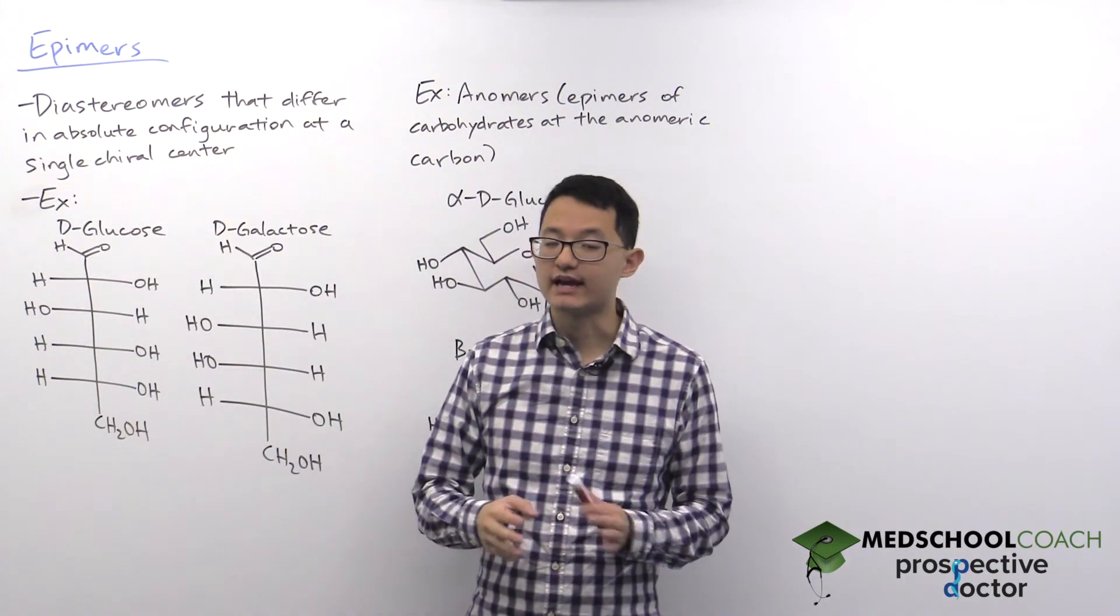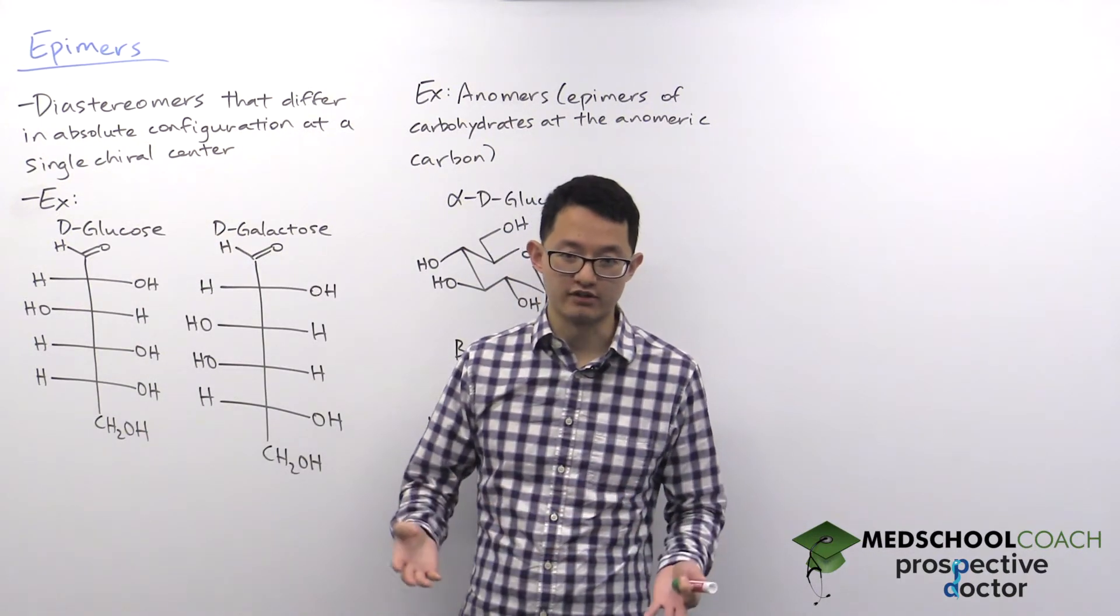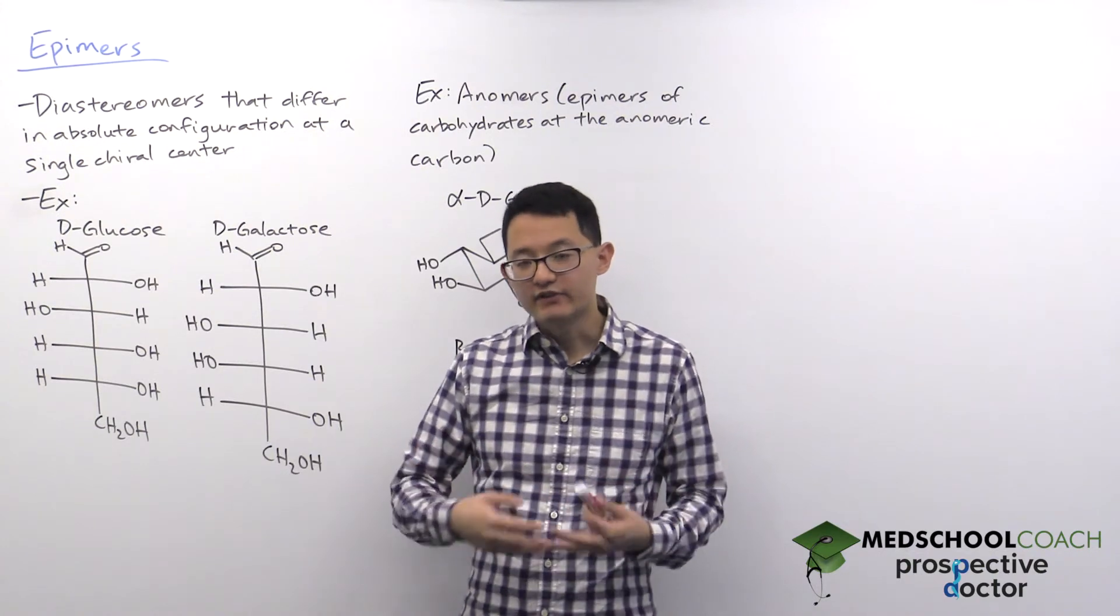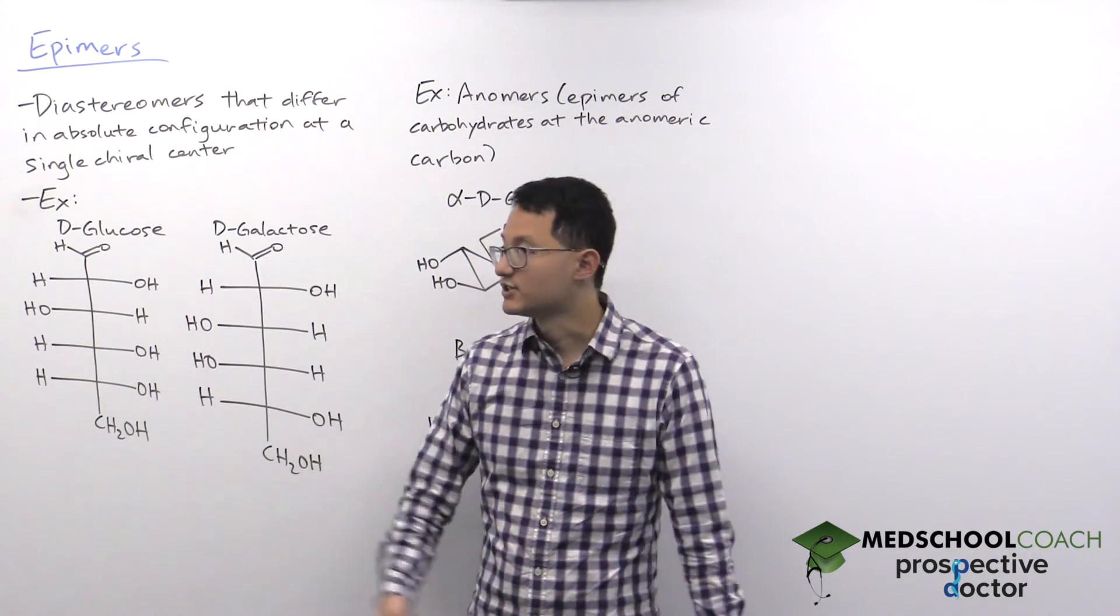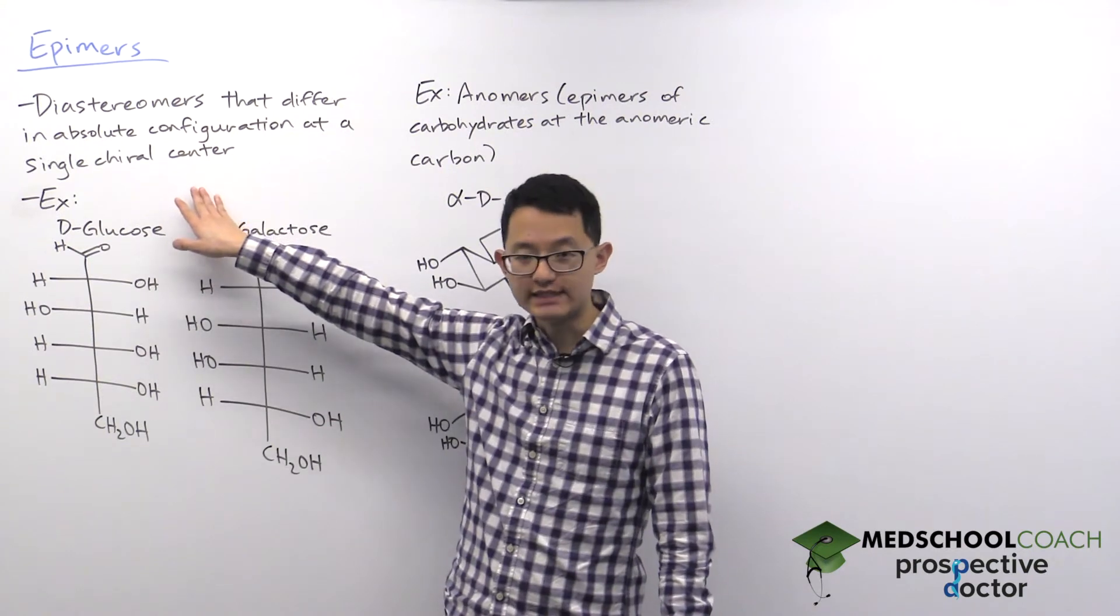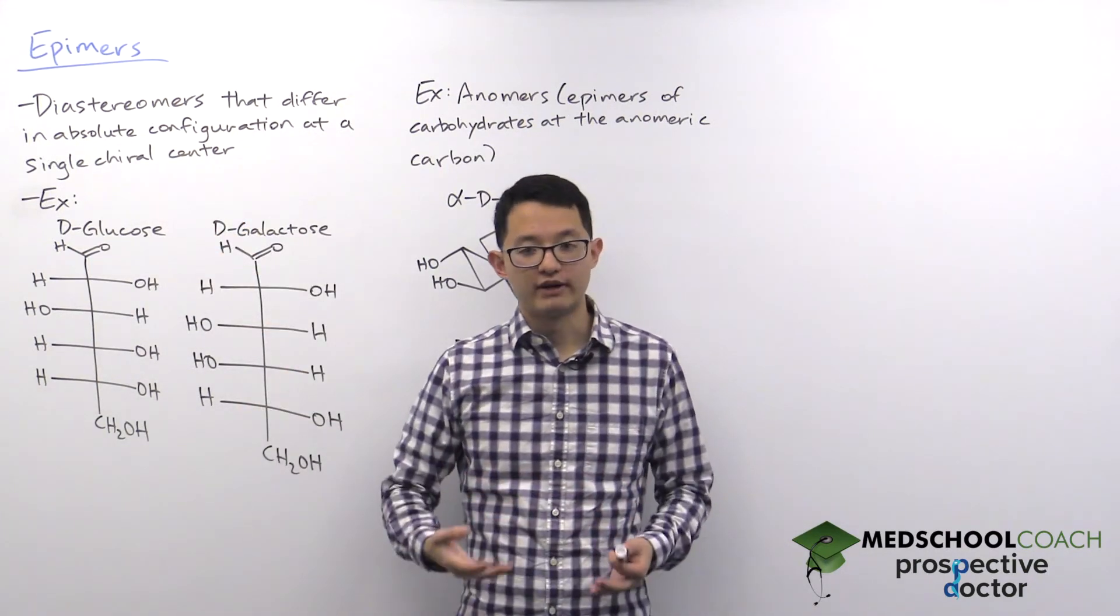Remember, diastereomers have different absolute configurations, but they can differ at multiple chiral centers. So if you have a situation where you differ at a single chiral center, then you are an epimer.